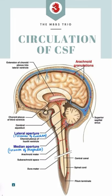Finally, CSF comes out of the fourth ventricle through the foramen of Magendie and Luschka to enter the subarachnoid space. In the subarachnoid space, CSF moves upward toward the cerebral hemispheres and downward toward the spinal cord.